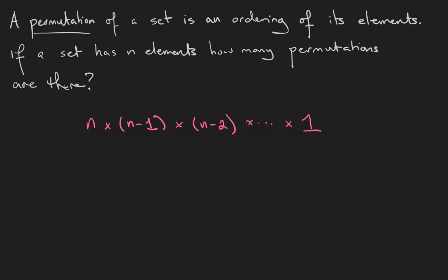Hopefully you find this computation familiar. It is exactly equal to n factorial. So there are n factorial permutations of a set that has n elements.